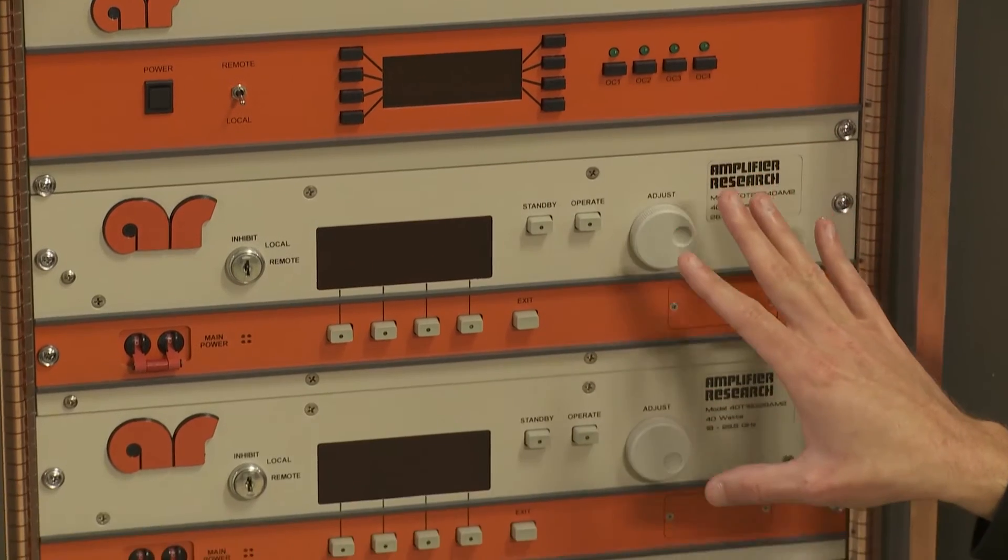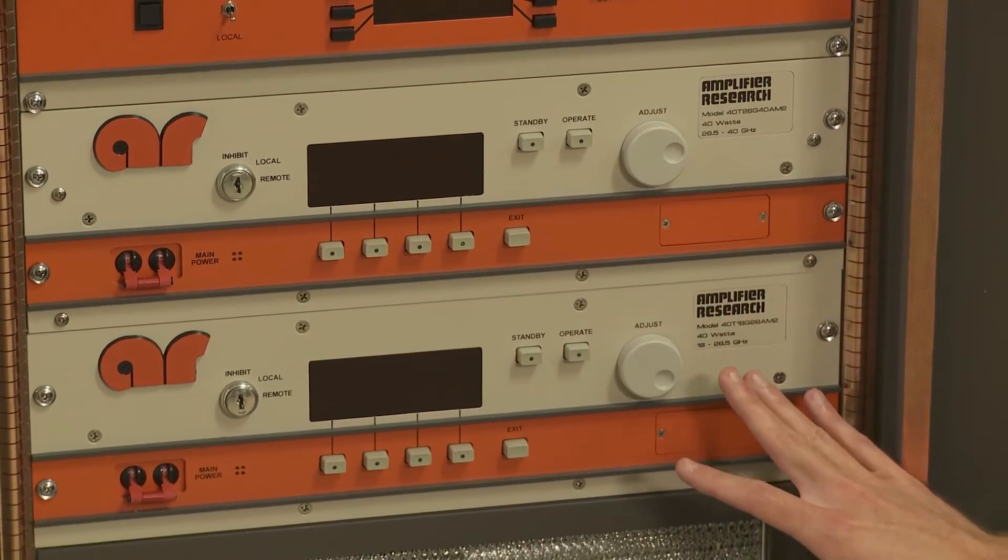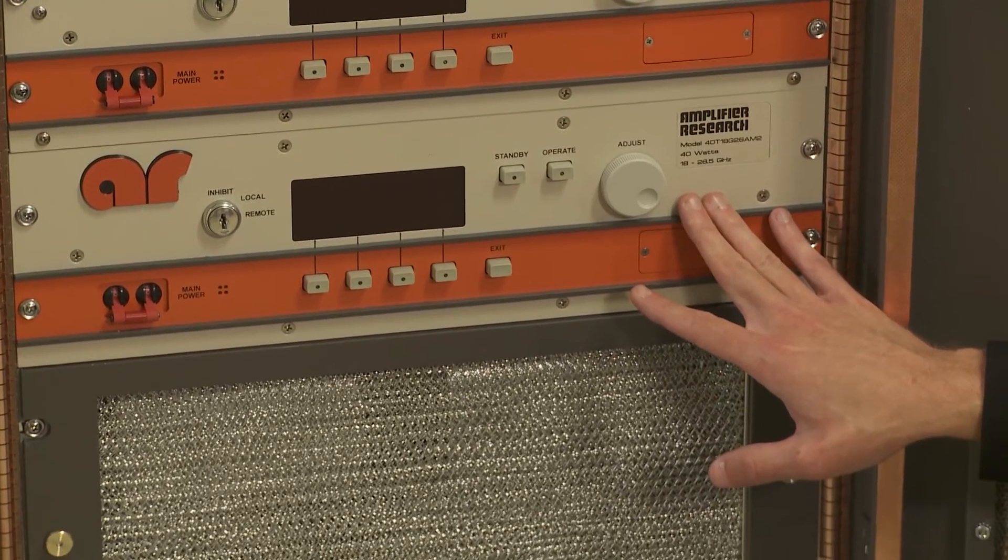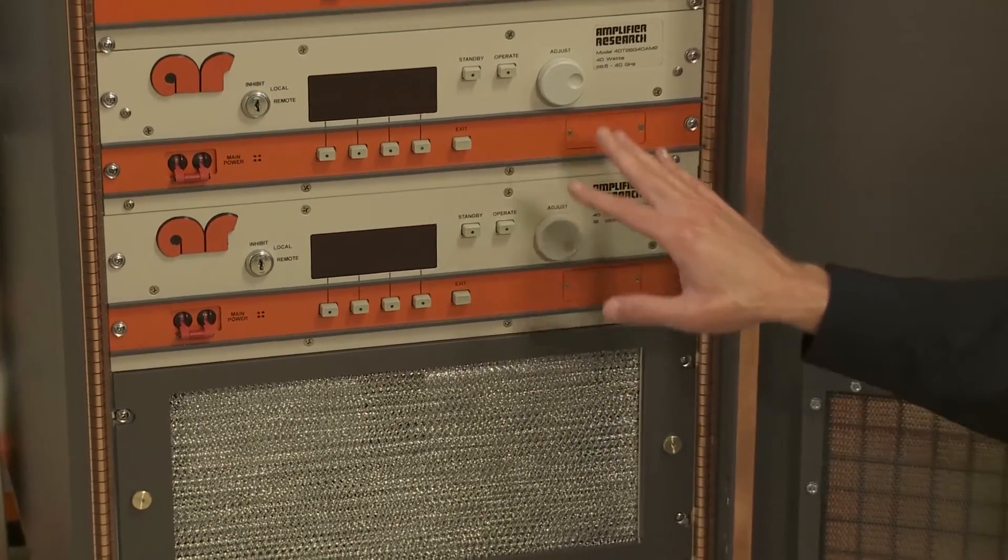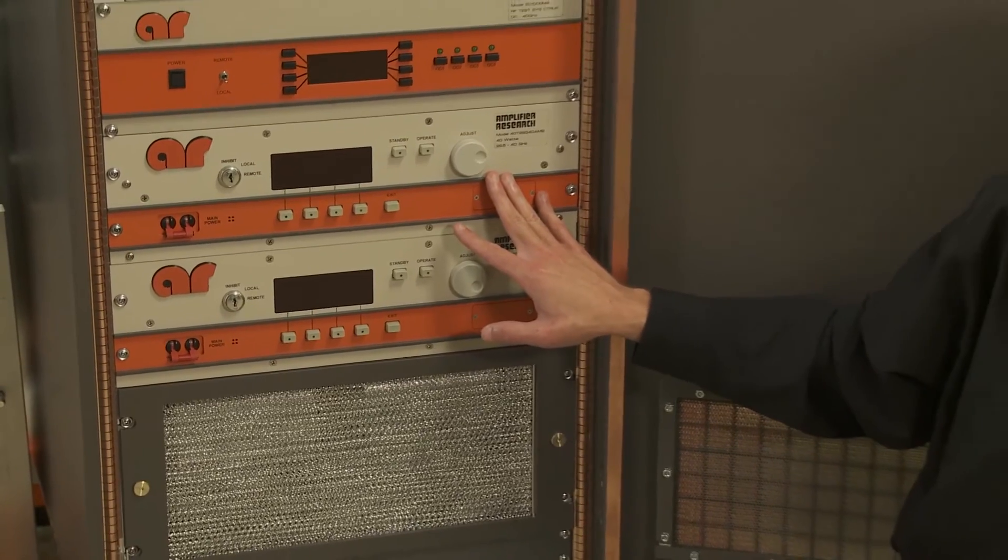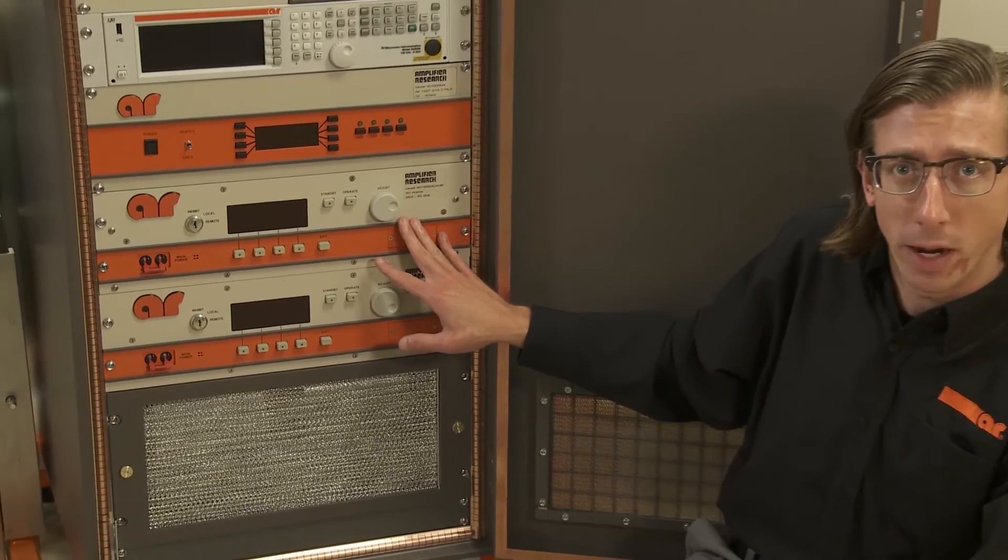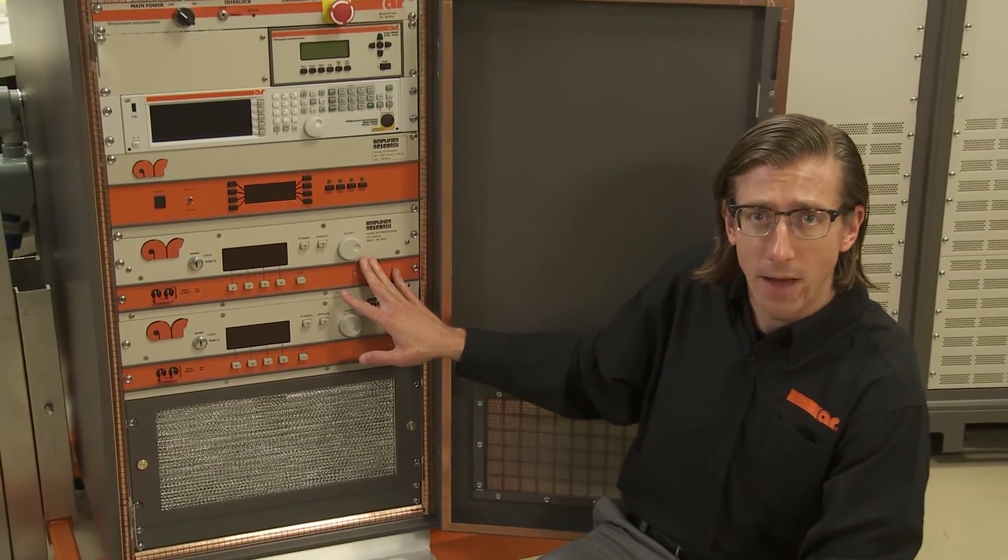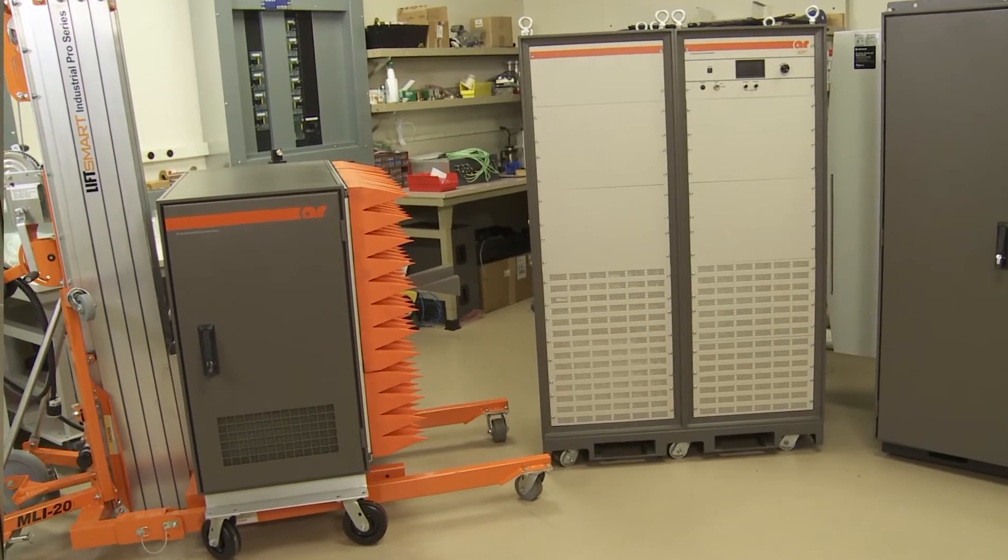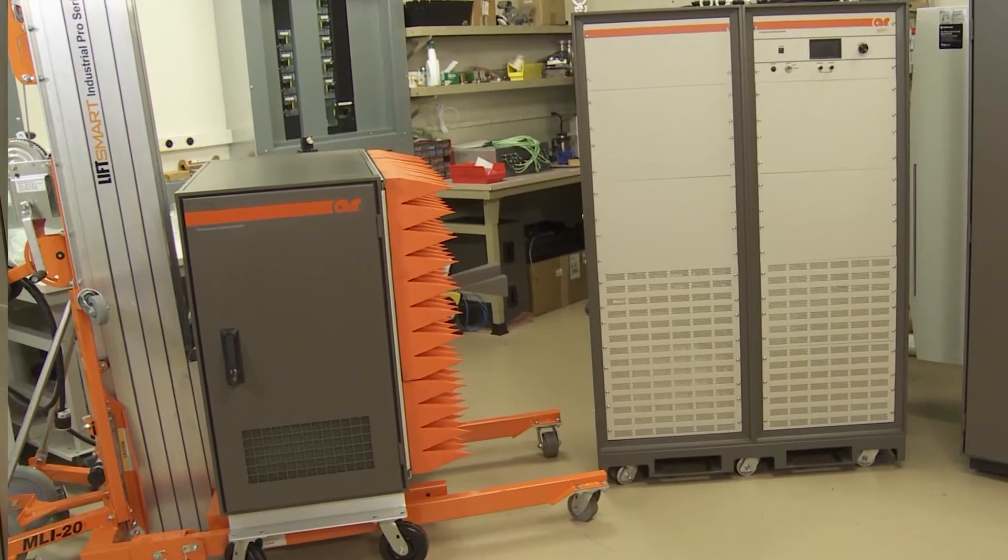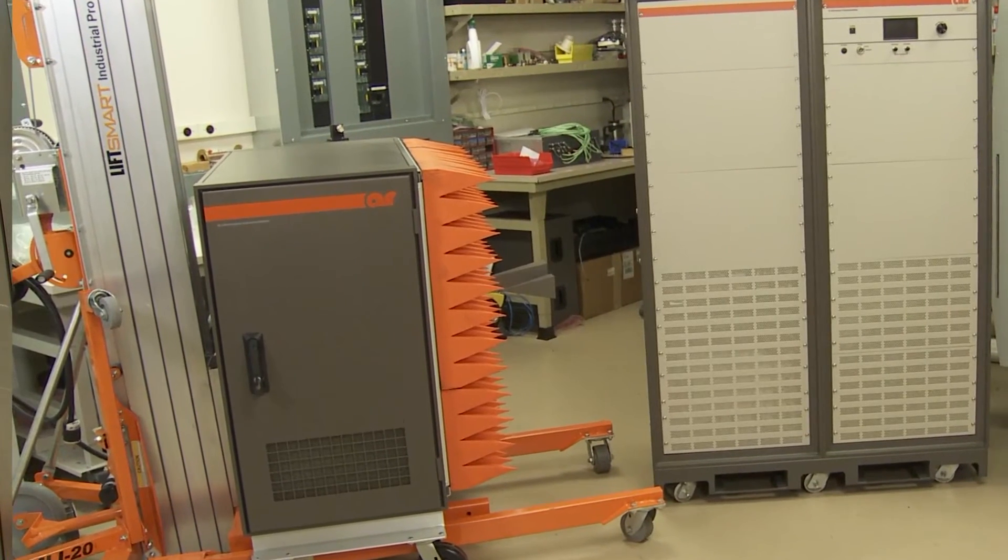And we have two amplifiers in this system. We have a 40 watt TWT amplifier providing instantaneous power from 18 gigahertz to 26 and a half gigahertz. And we have another 40 watt TWT amplifier providing 40 watts of rated power from 26 and a half gigahertz to 40 gigahertz. This system is mounted on top of a manual system for maintaining height up to 6 meters.